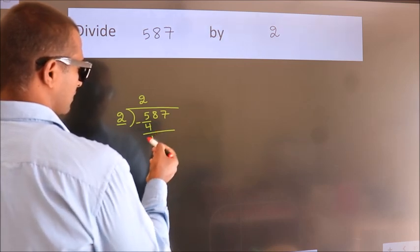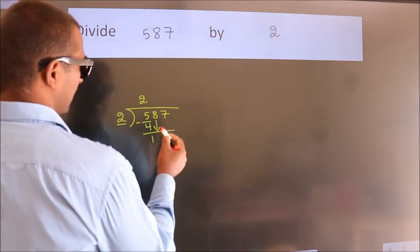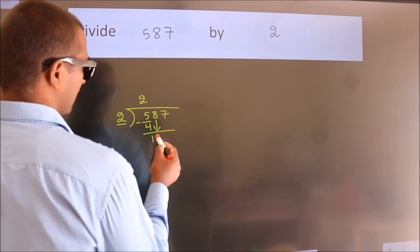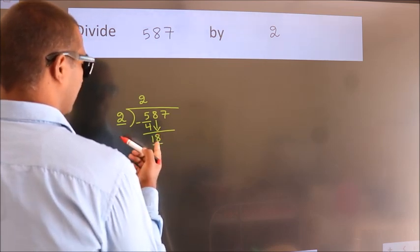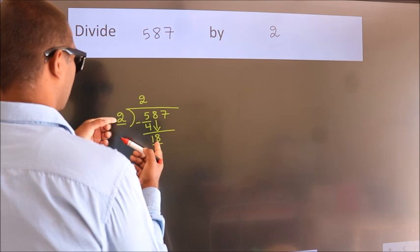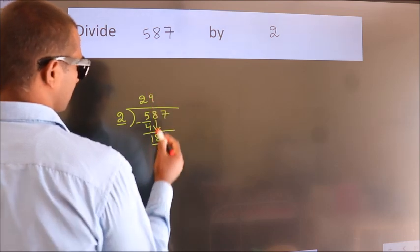After this, bring down the beside number. 8 down. So, 18. When do we get 18? In 2 table, 2 9s, 18.